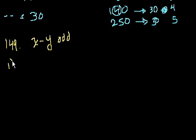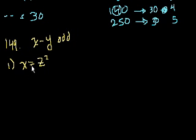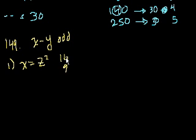Let's look at the statements. Statement 1 says x is equal to z squared. That gives me no information about y, and very little about x just yet. It tells me that x is a perfect square, but a perfect square could be odd or even — it could be 16 or it could be 9. So this doesn't give me much information by itself.